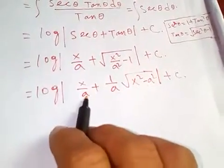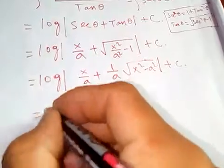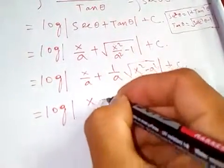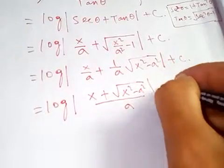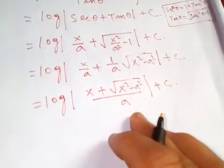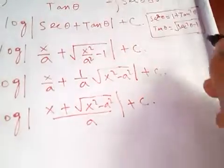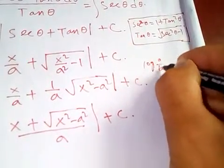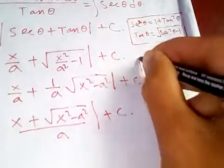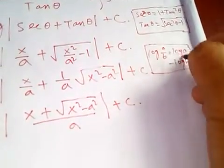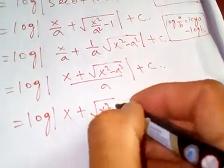Let me simplify this: x plus square root of x squared minus a squared, all over a. Now we know that log of a over b equals log a minus log b. Applying this formula, we get log of x plus square root of x squared minus a squared, minus log a, plus C₁.